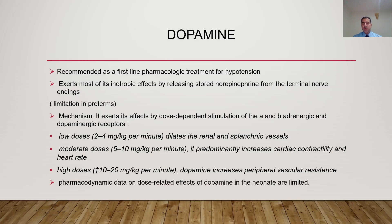The most important and commonly used drug is dopamine, recommended as the first-line pharmacological treatment for hypotension. It exerts most of its inotropic effects by releasing stored norepinephrine from terminal nerve endings. Unfortunately, this is a limitation in some preterm babies because the norepinephrine reserve is limited, so with continued high doses the baby stops benefiting as stored norepinephrine is depleted.